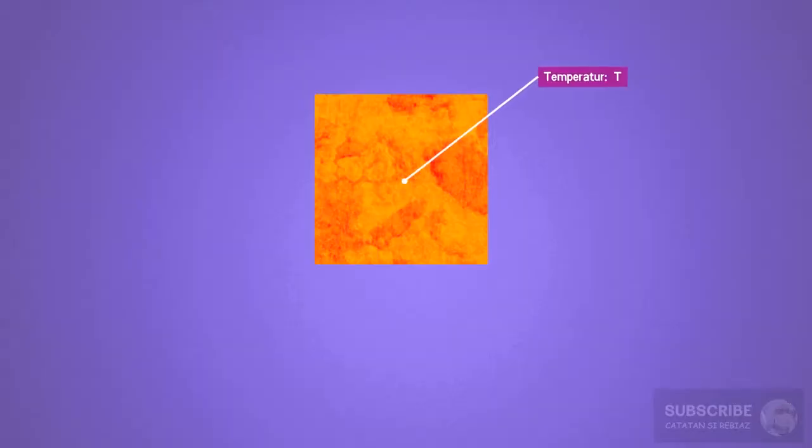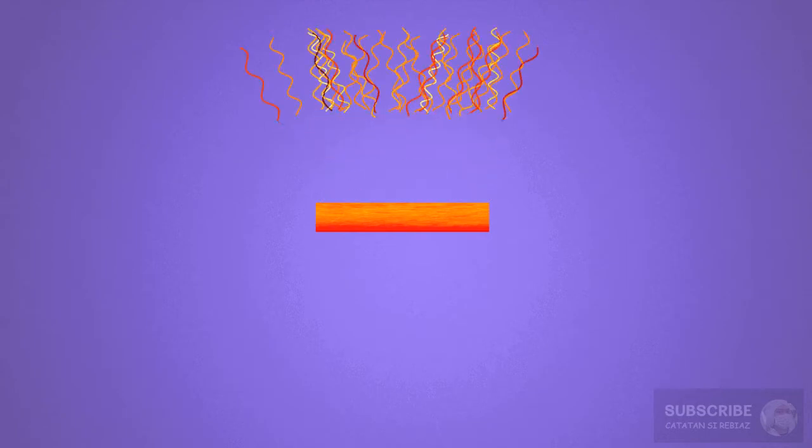A sheet of metal has a certain temperature. Based on experiments, the surface of a black body emits electromagnetic waves in various wavelengths.